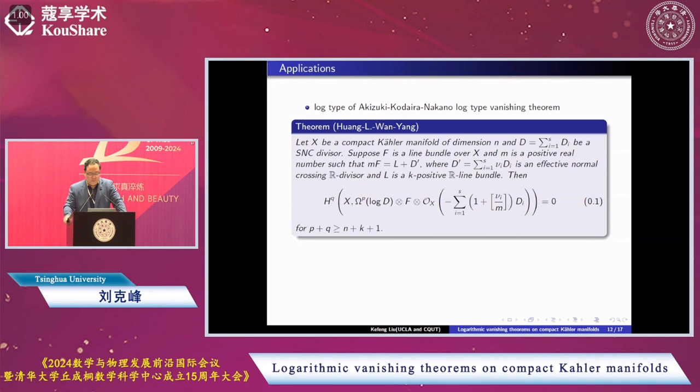Then we have this sheaf cohomology. It looks very complicated but it's relatively clean. H^q(omega^p(log D) tensor O_X(-summation(1 + floor(nu_i/M))D_i)) equals 0 for any p plus q greater or equal to n plus k plus 1. So k-positive means it's weaker than ample, so we allow the integer k. We need p plus q to be bigger.